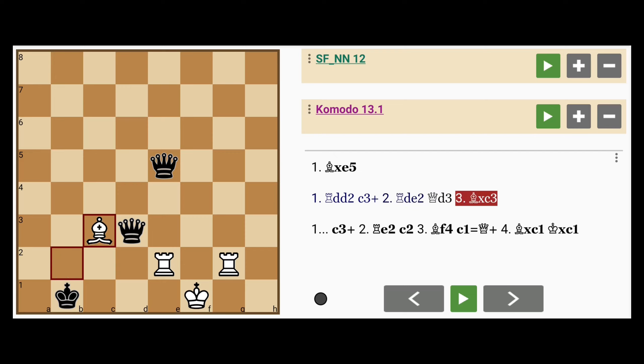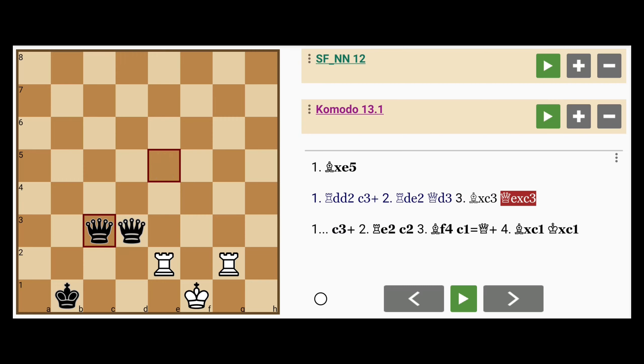White might try desperately bishop captures pawn. Queen on the e file captures the bishop. King to g1. Two queens versus two rooks doesn't look good for white.